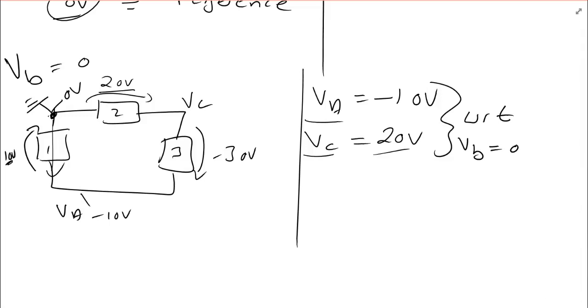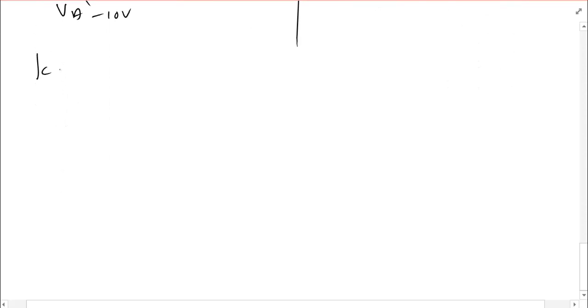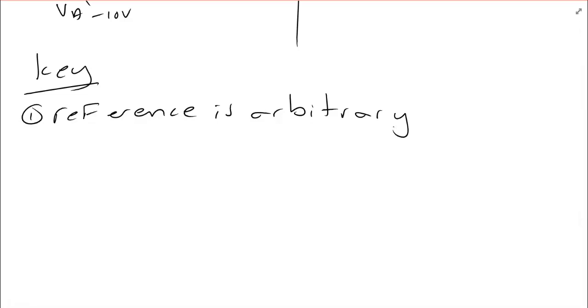So, what are my key points? The first one is, reference is arbitrary. I can choose any node as my reference node. It doesn't really matter which one I choose. However, sometimes it's far simpler to choose one node over another. As we go through examples in this course, I'll demonstrate how I might choose a reference for that very reason.